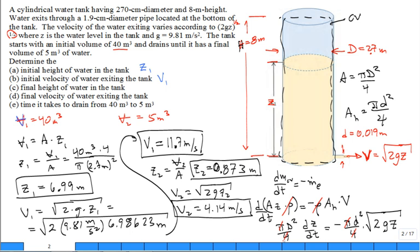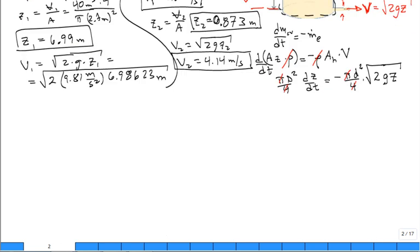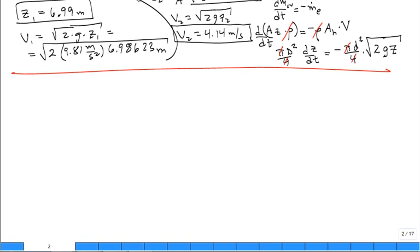That area could come outside, the rhos cancel. I'm going to put in the pi D squared over 4 times the time derivative of the elevation of the water in the tank equals minus pi lowercase d squared over 4 times the square root of 2gz. We can cancel the pi and the 4, and we have basically a differential equation like you solve in EA1.